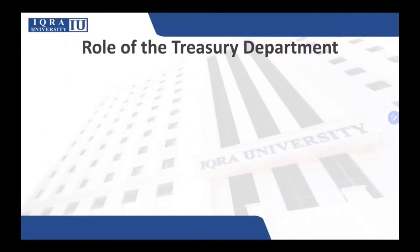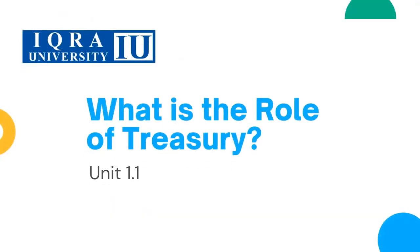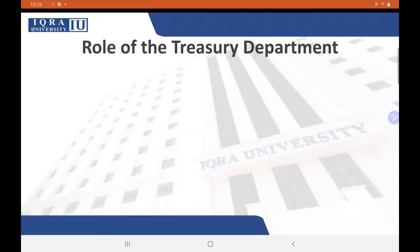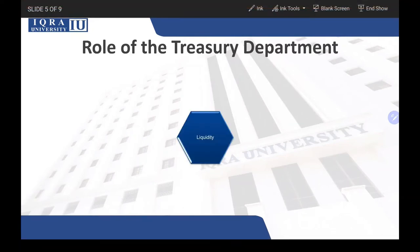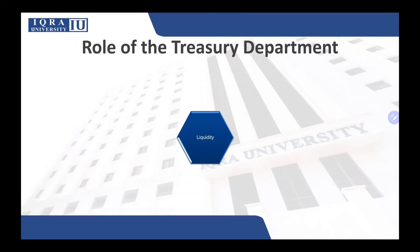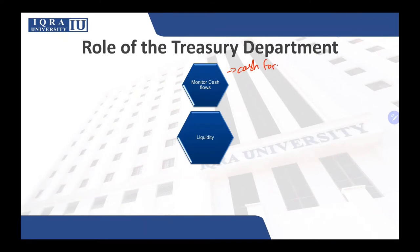The role of the treasury department: the main role is to manage liquidity, but in order to do so they have many other responsibilities. For example, they will have to monitor the cash flows of the organization, which involves cash forecasting. The treasury department makes cash forecasts so that they can see whether there is any cash deficiency or whether they are going to have surplus cash.